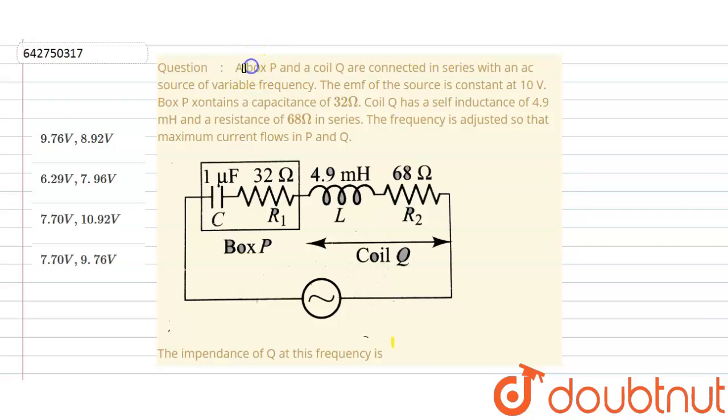Hello students. In this question there are two boxes. The first box P and the second box is a coil Q connected in series with an AC source with a variable frequency. The EMF of the source is constant at 10 volts. Box P contains a capacitance of 32 ohms. Coil Q has a self-inductance of 4.9 mH and the resistance is 68 ohms in series.